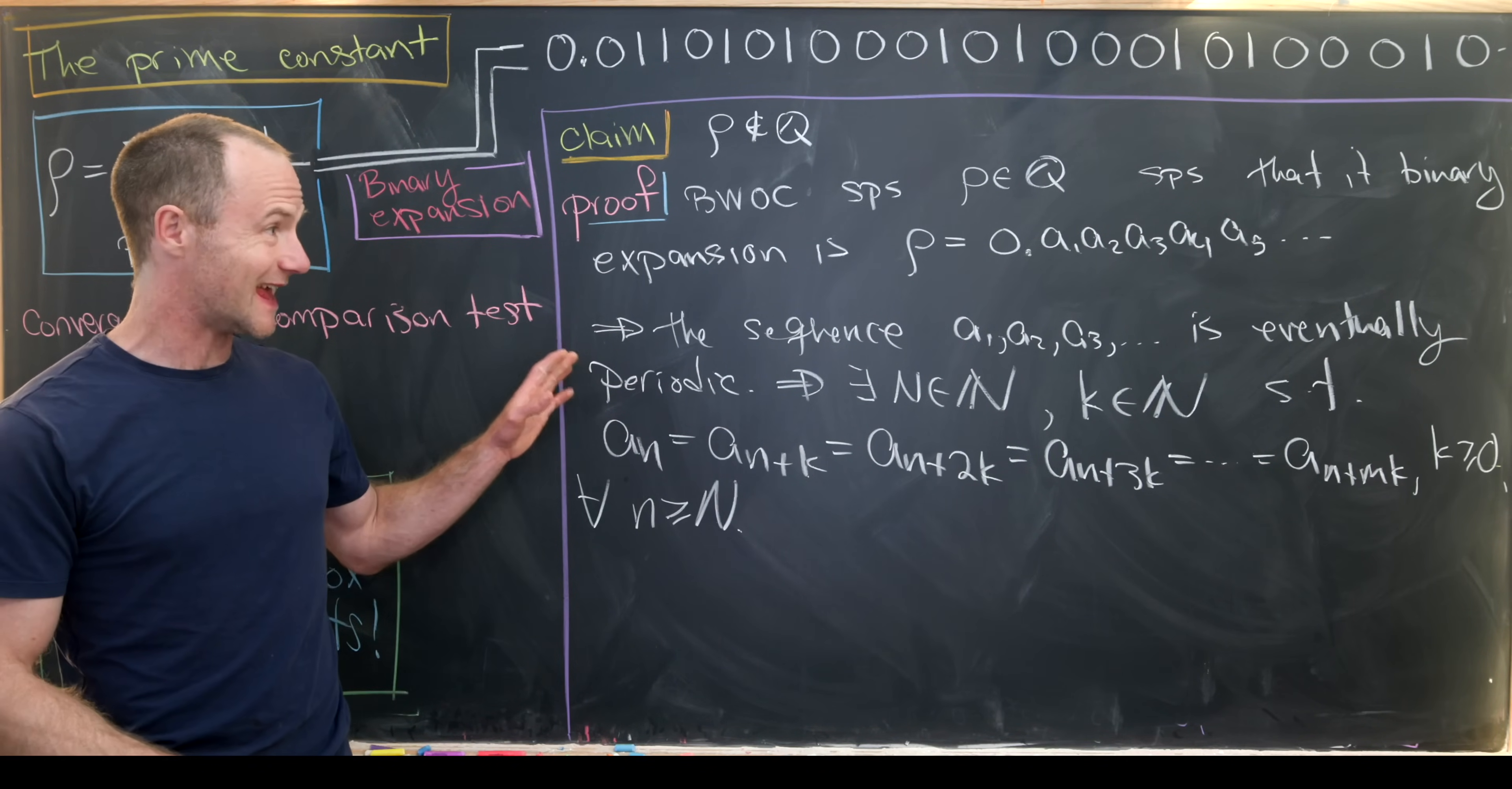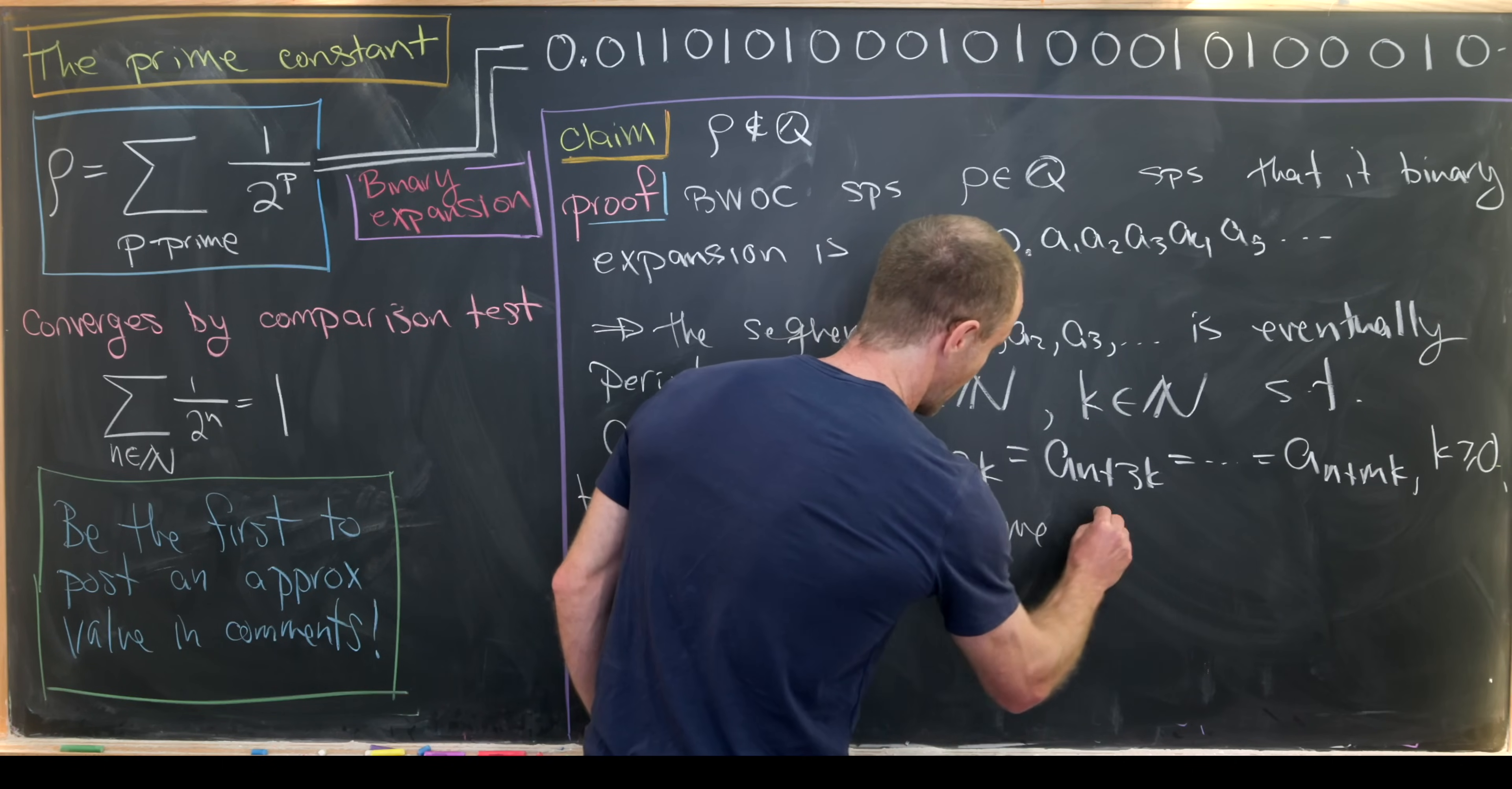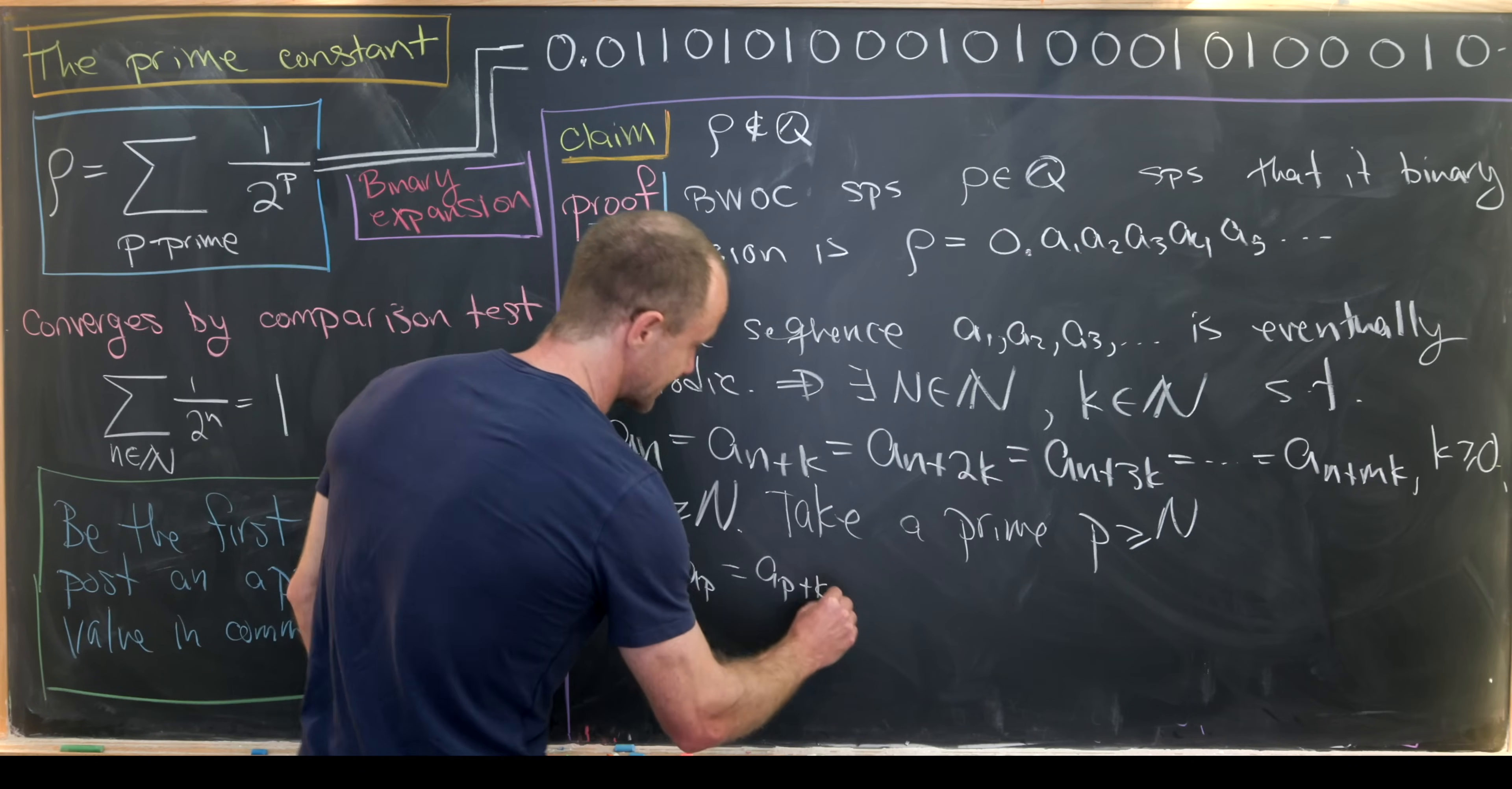So we haven't used anything about the fact that we're summing over prime numbers, but we're about to do that. And we're going to use another well-known fact that there are infinitely many primes. So since there are infinitely many primes, we can take some prime p that is bigger than n. Actually, I guess we could take it to be bigger than or equal to n by our setup here.